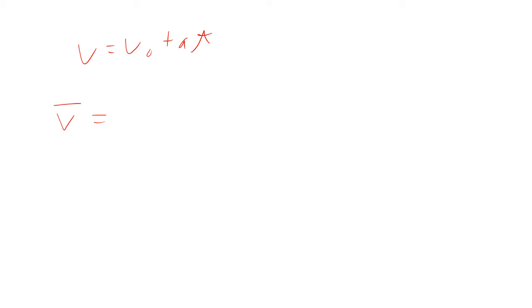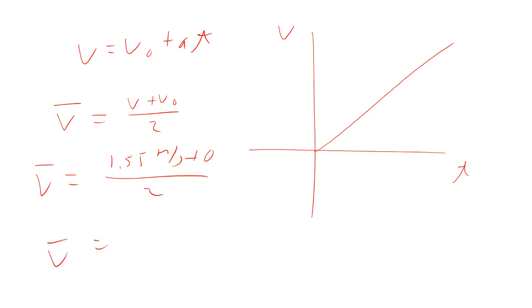So, you know, the average velocity. Remember, this looks like this, right? V versus T. So the average velocity is going to be basically just the average. V plus V naught over two. So the average velocity is going to be equal to 1.55 meters per second plus zero over two. And so that comes out to be 0.775 meters per second.